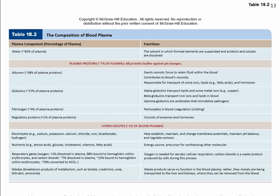In solution within plasma, we have electrolytes — dissociated salts, acids, and bases — including bicarbonate, hydrogen ions, and sodium ions. There are also various nutrients, the respiratory gases oxygen and carbon dioxide, and metabolic waste products such as creatinine, urea, bilirubin, and ammonia. These wastes are distributed to the lungs to be exhaled or to the kidneys for excretion.